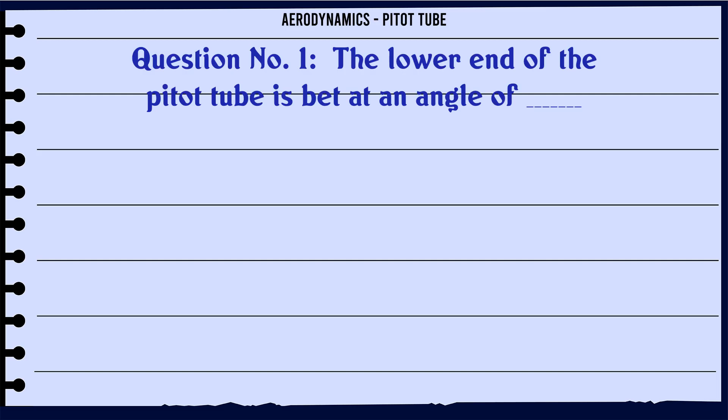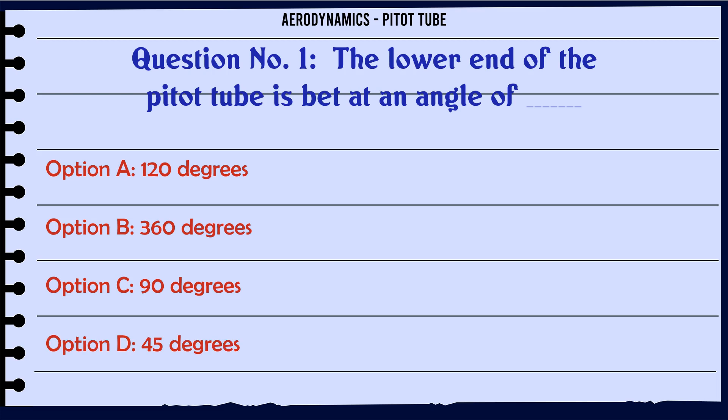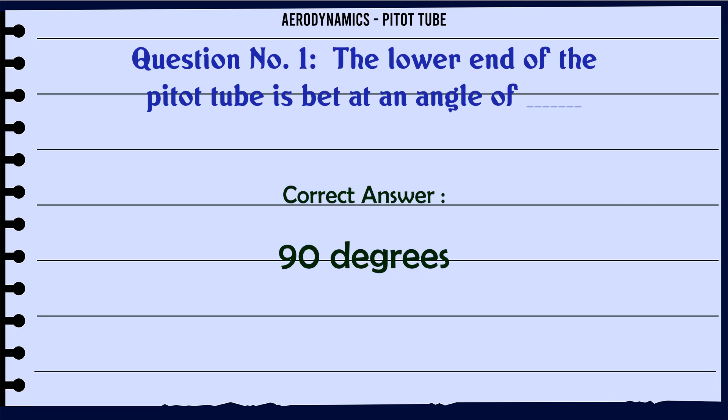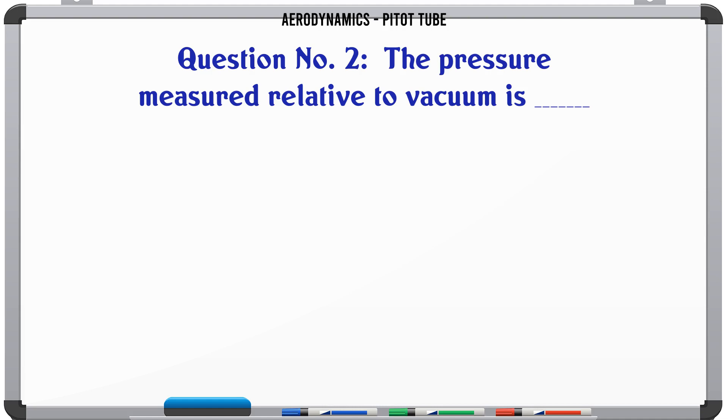The lower end of the pitot tube is bet at an angle of: A. 120 degrees, B. 360 degrees, C. 90 degrees, D. 45 degrees. The correct answer is 90 degrees. The pressure measured relative to vacuum is A.